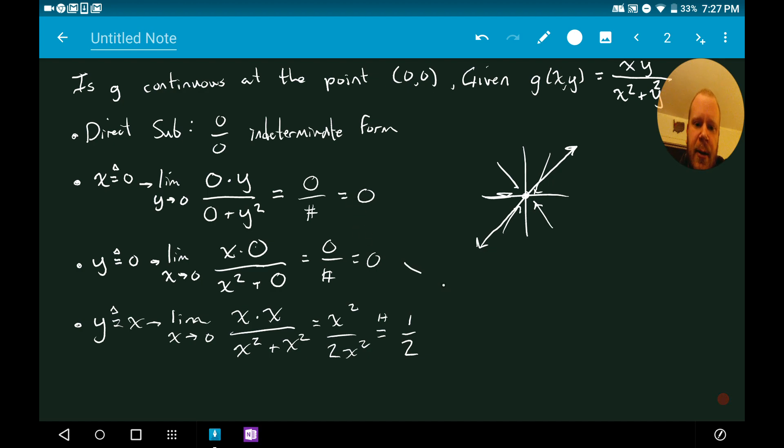So now we have a disagreement here. Like before we hadn't proved anything, we didn't show that the limit existed. Now we have this disagreement. Zero is not equal to one half. Therefore limit at (0,0) does not exist. And that means that function G is not continuous at (0,0).